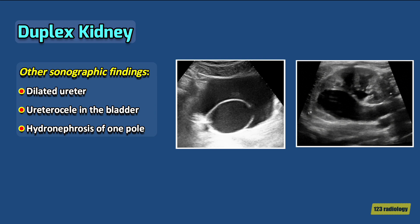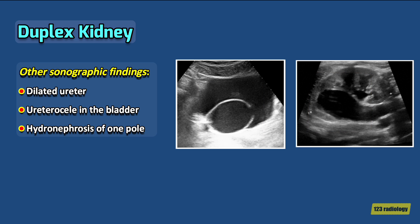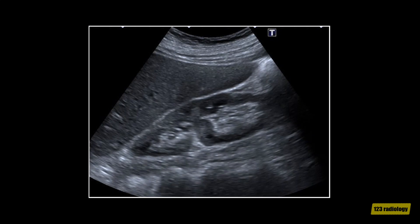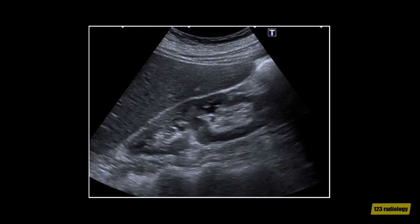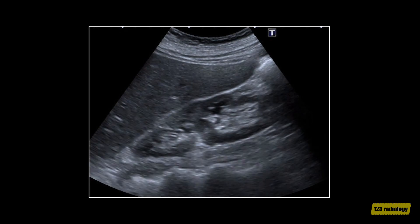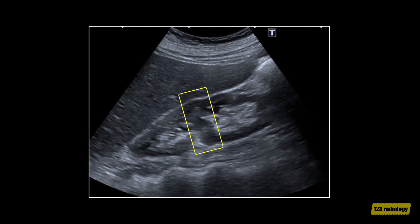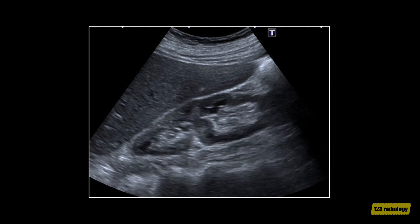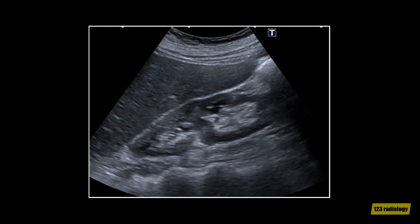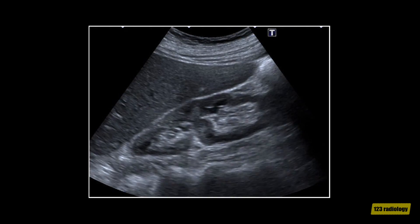Other sonographic findings suggestive of duplex kidney include a dilated ureter, the presence of a ureterocele in the bladder, or significant hydronephrosis of one pole of the kidney. The presence of more than one of these features increases the likelihood of a duplex kidney. This is a video clip of a longitudinal ultrasound examination of the right kidney. It shows two central echogenic renal sinuses with intervening bridging renal parenchyma, suggestive of duplex kidney. No evidence of hydronephrosis in either renal sinus.